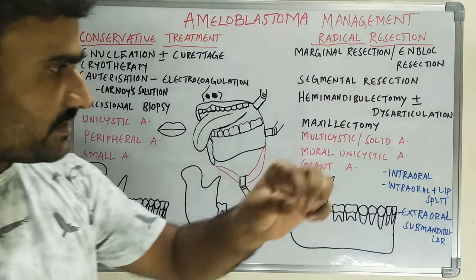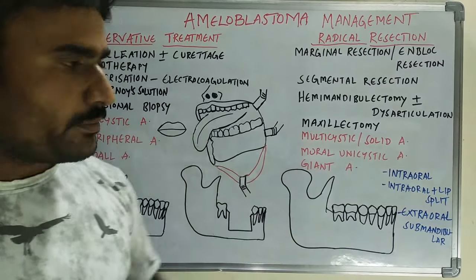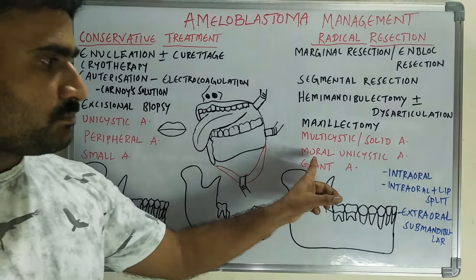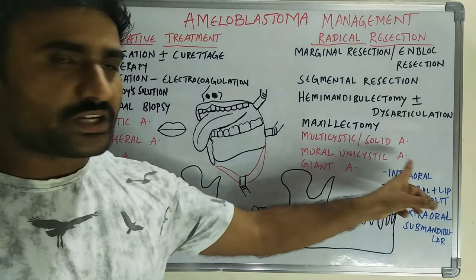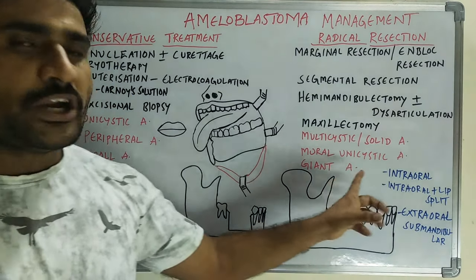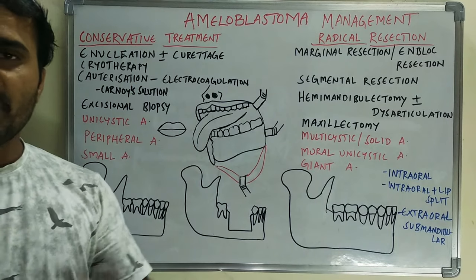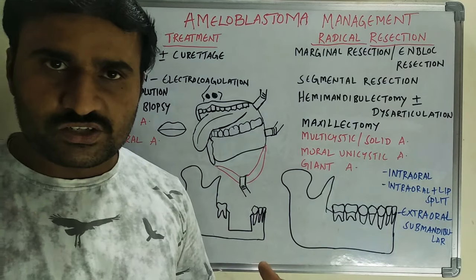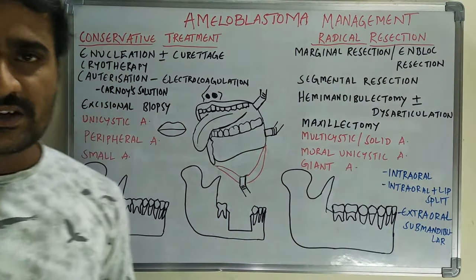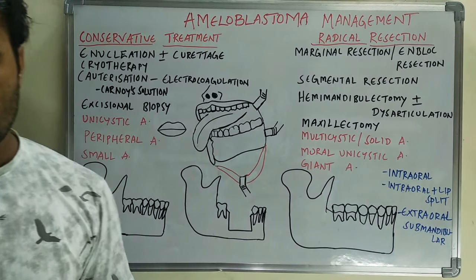For radical resection, the indications are multicystic or solid ameloblastomas, mural unicystic ameloblastomas, or giant ameloblastomas — that is, very large lesions — should be treated by radical resection.